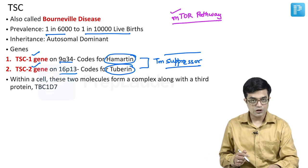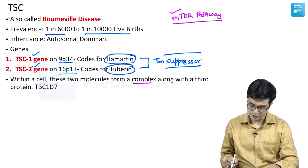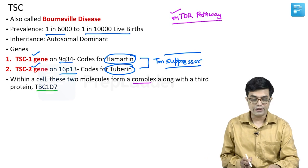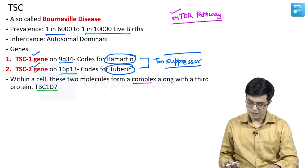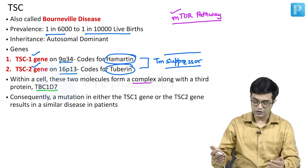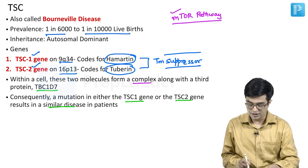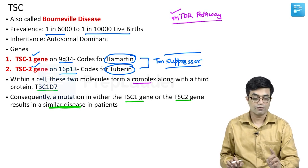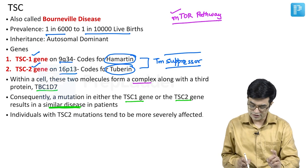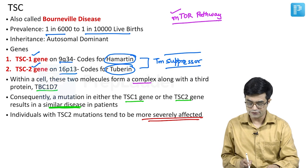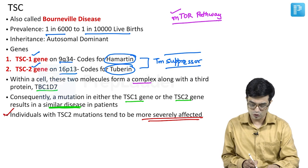Within a cell, hamartin and tuberin combine to form a complex along with a third protein called TBC1D7. Together, these produce their regulatory effects on the mTOR pathway. A mutation in either TSC1 or TSC2 gene results in a similar disease. However, those with TSC2 mutation tend to have a more severe disease than TSC1 — this is an important exam point.